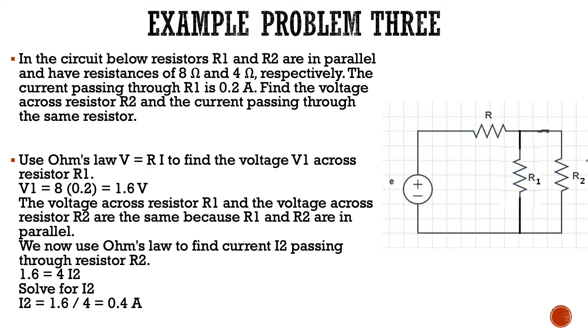Now we're going to example problem 3, which is more complicated than the other two, and we're throwing in a parallel circuit here. In the circuit below, resistors R1 and R2 are in parallel and have resistances of 8 ohms and 4 ohms respectively. The current passing through R1 is 0.2 amps. Find the voltage across resistor R2 and the current passing through the same resistor. As you can see, I posted our circuit on the right. It is in parallel this time instead of series.